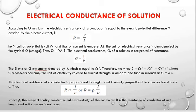Now, electrical conduction of the solution. According to Ohm's law, the electric resistance R of a conductor is equal to the electric potential difference V divided by electric current I: R = V/I. The SI unit of potential is volt, current is ampere, and the SI unit of electrical resistance is ohm, which can also be expressed as volt per ampere. The electrical conductance G of a solution is the reciprocal of resistance: G = 1/R.